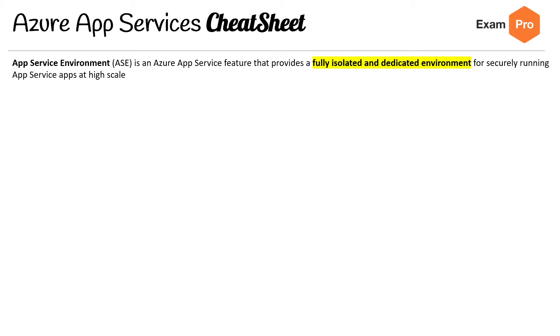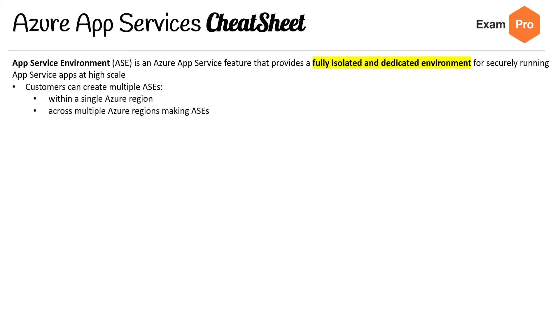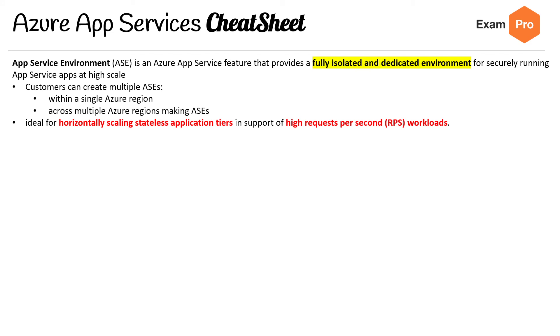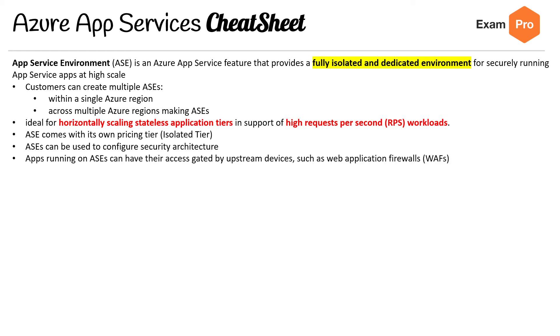Moving on to the second slide — App Service Environment (ASE). ASE is an Azure App Service feature that provides a fully isolated and dedicated environment for securely running App Service apps at high scale. Customers can create multiple ASEs within a single Azure region or across multiple Azure regions, making ASE ideal for horizontal scaling of stateless application tiers or high requests-per-second (RPS) workloads. ASE comes with the isolated pricing tier.